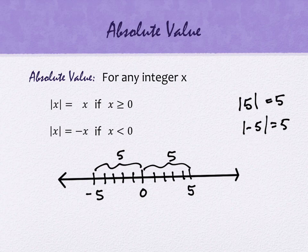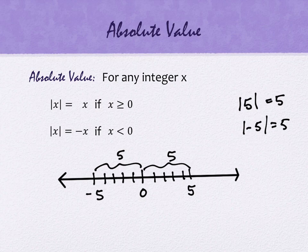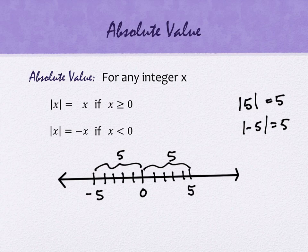The absolute value of 5 is 5 because the distance for 5 back to 0 is 5. And the absolute value of negative 5 is also 5 because the distance back to 0 is 5. A lot of times people think absolute value just means take away the negative. The reason that works is because what you're actually doing is finding a distance, and distances are positive — just like I don't tell you the distance from Shawnee back to my house is negative 17 miles.